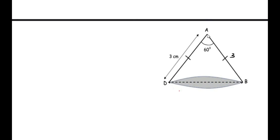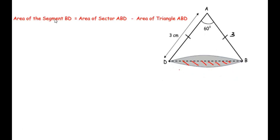Considering sector ABD with A as center, the lower shaded part represents a segment of sector ABD. To find the area of this segment, we take the area of the entire sector ABD and subtract the area of triangle ABD from it. So: area of segment BD = area of sector ABD minus area of triangle ABD.